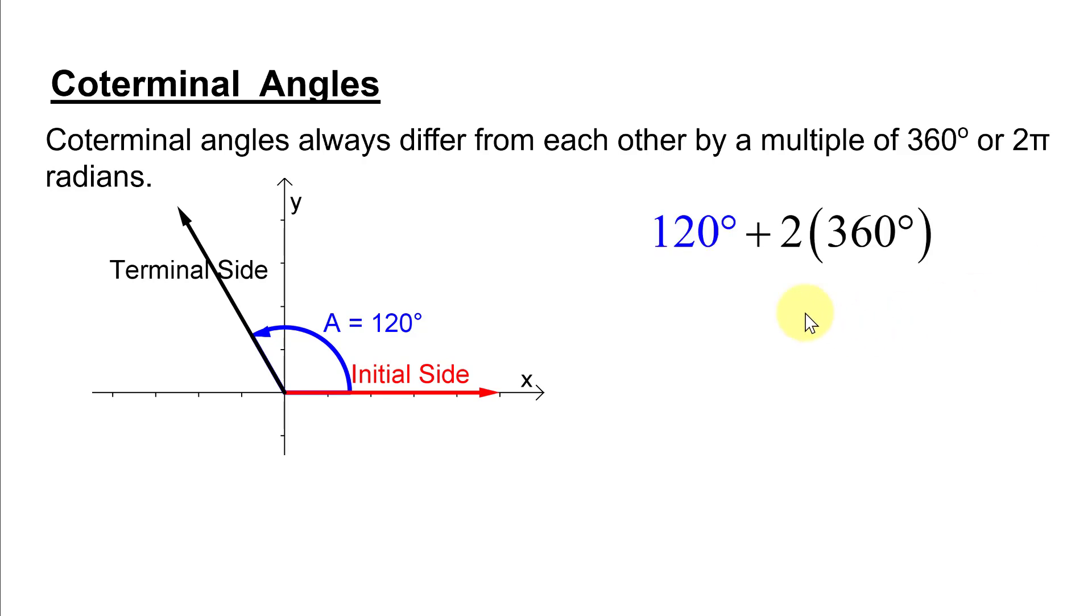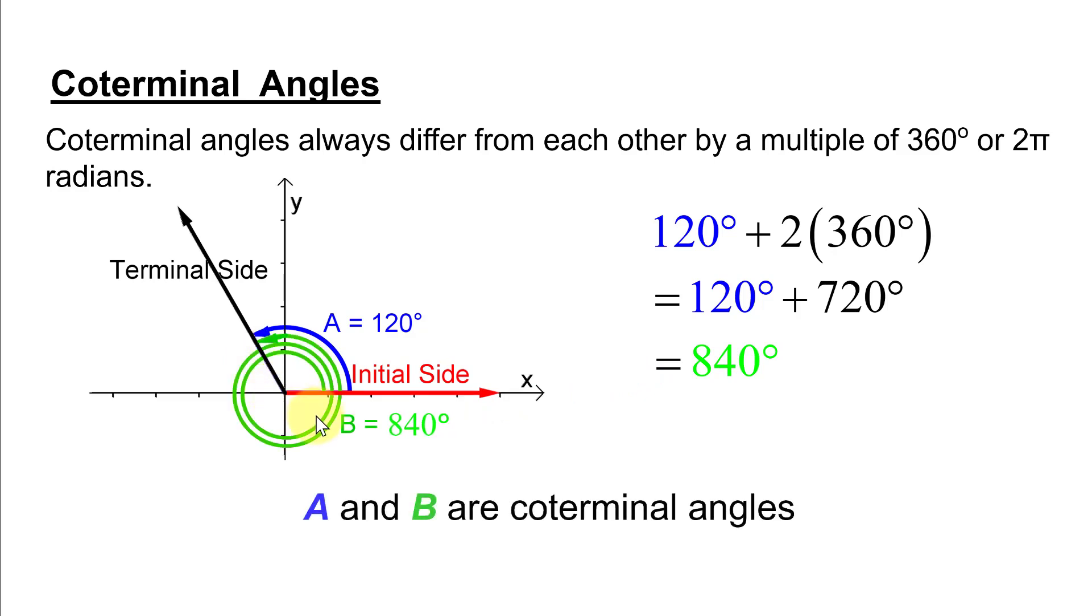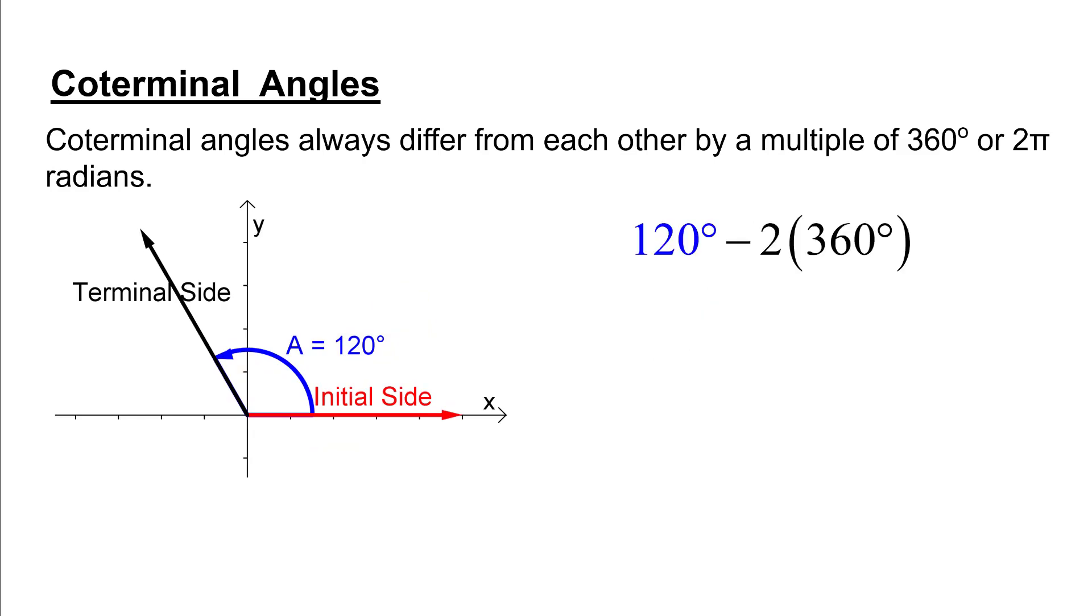Next, we can add two rotations or 2 times 360 degrees, which is 720 degrees. That will give us 840 degrees. How do we graph that? It would be two whole rotations plus 120 degrees. So here's 840 graphed right here. And 840 degrees and 120 degrees are coterminal angles.